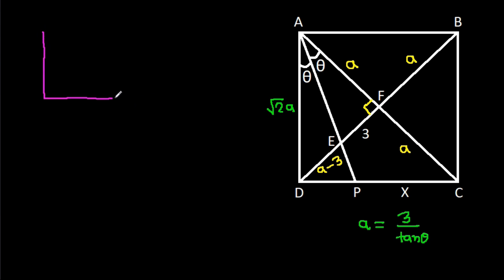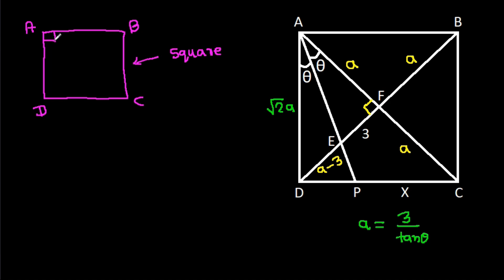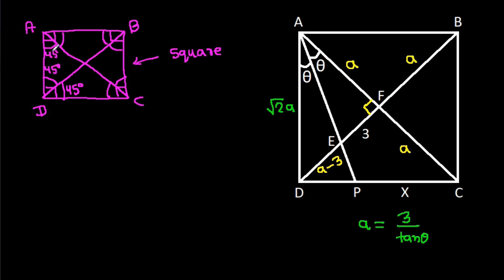Now in square ABCD, all angles are 90 degrees. If we join diagonals AC and BD, they bisect the corner angles, so each half-angle will be 45 degrees. Thus this angle, this angle, and this angle are all 45 degrees.